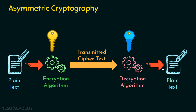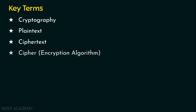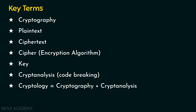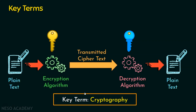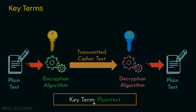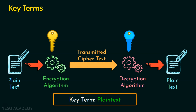This illustrates asymmetric cryptography — different keys are used for encryption and decryption. Now let's see the various key terms: cryptography, plaintext, ciphertext, cipher (also called encryption algorithm), key, cryptanalysis, and cryptology. The first key term is cryptography: it contains a suite of methods or algorithms that convert plaintext to ciphertext and ciphertext back to plaintext. The second key term is plaintext: this is the message the sender wants to send. The message can be simple text, an image, animation, audio, video, or numbers.